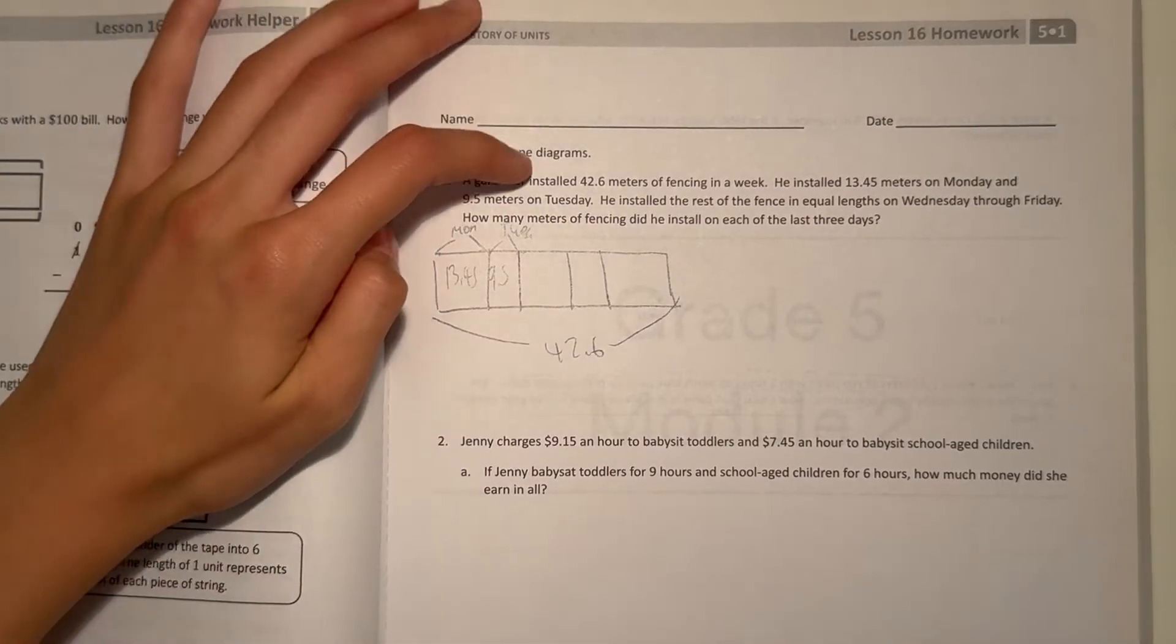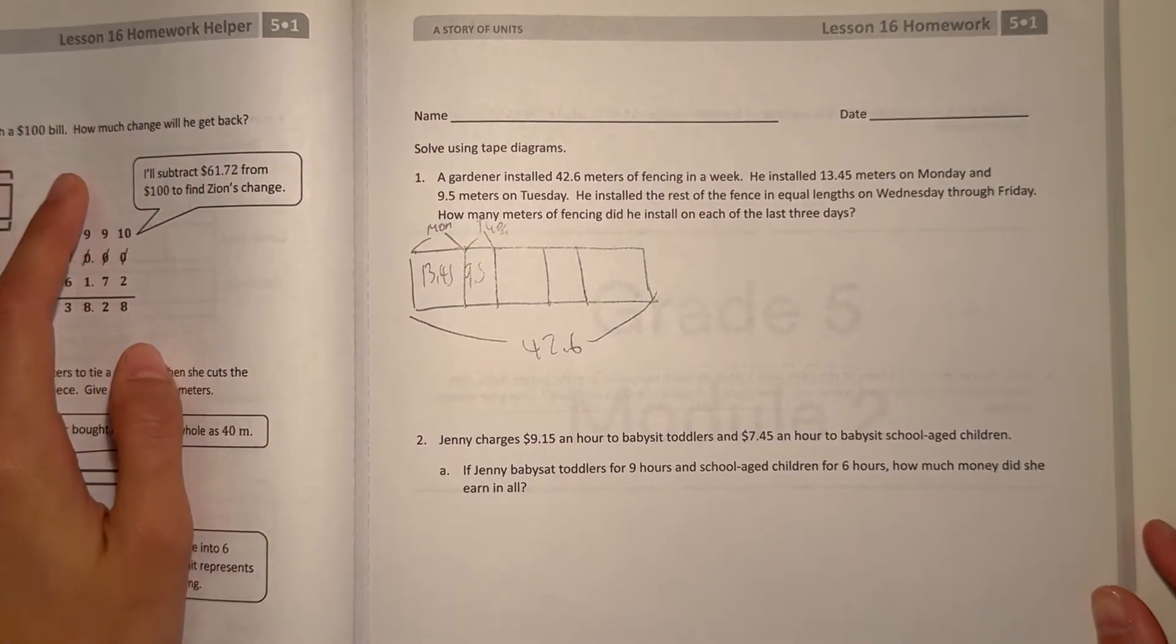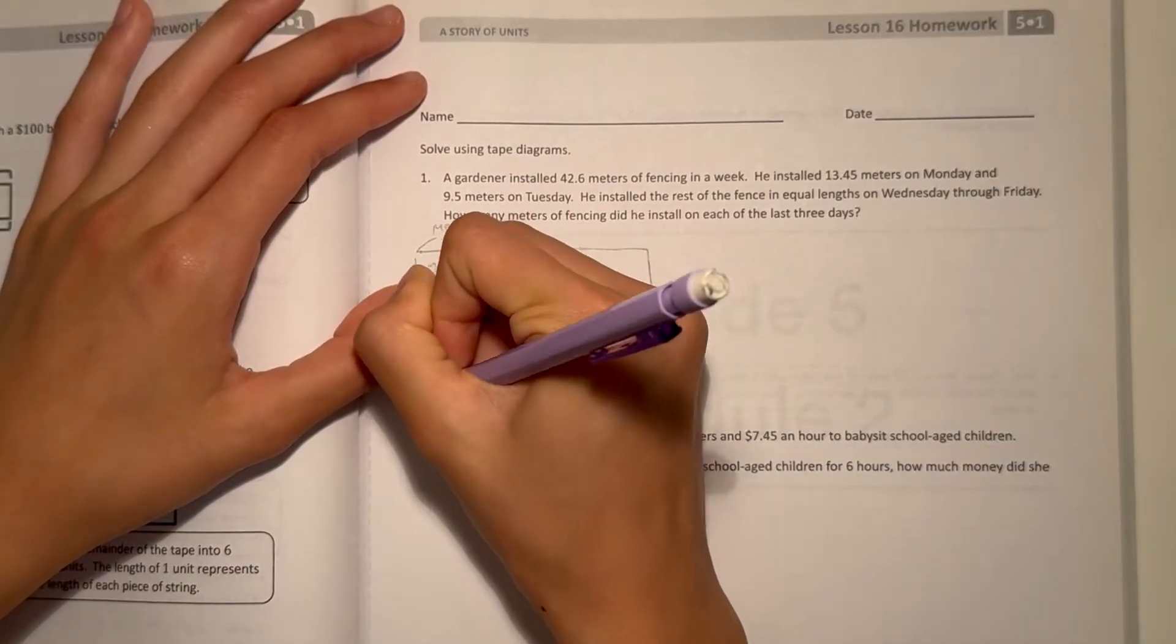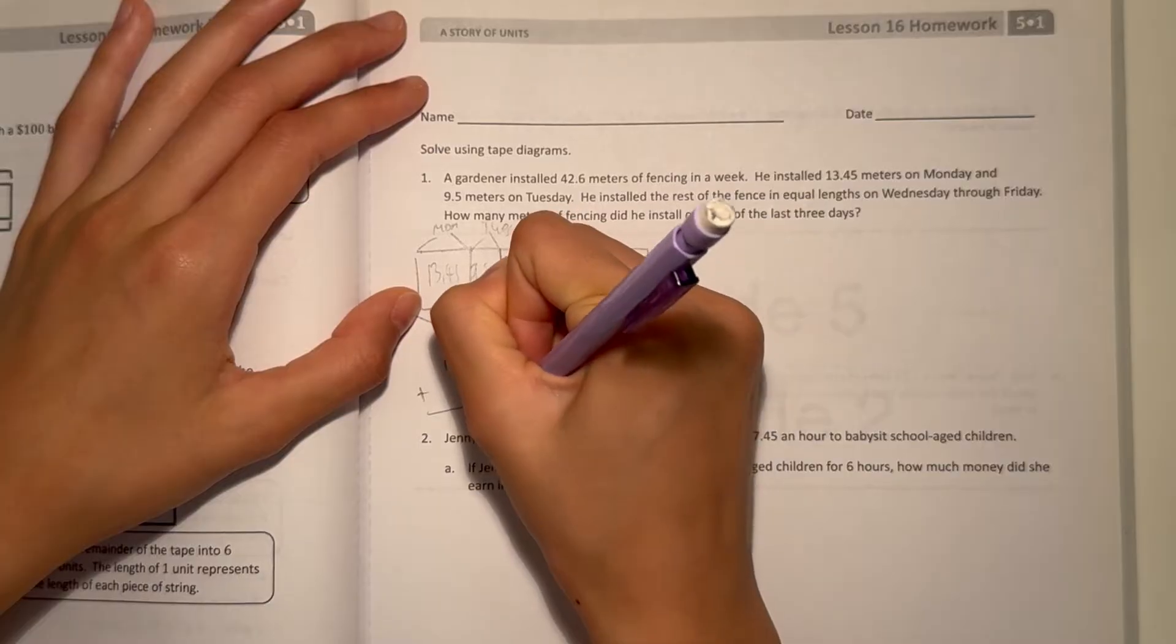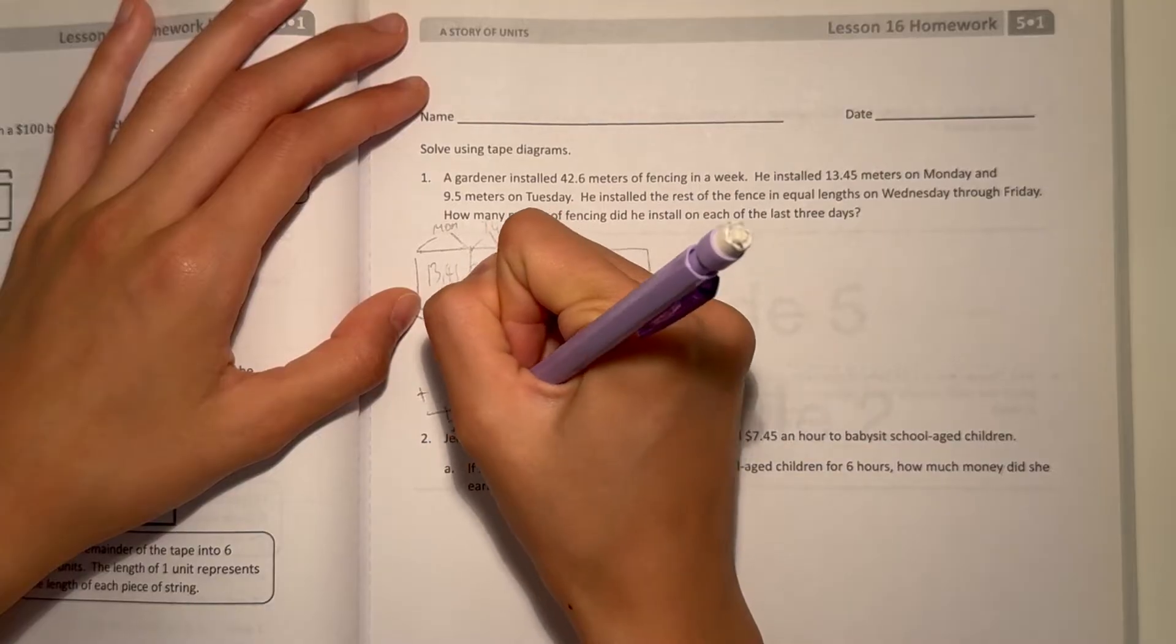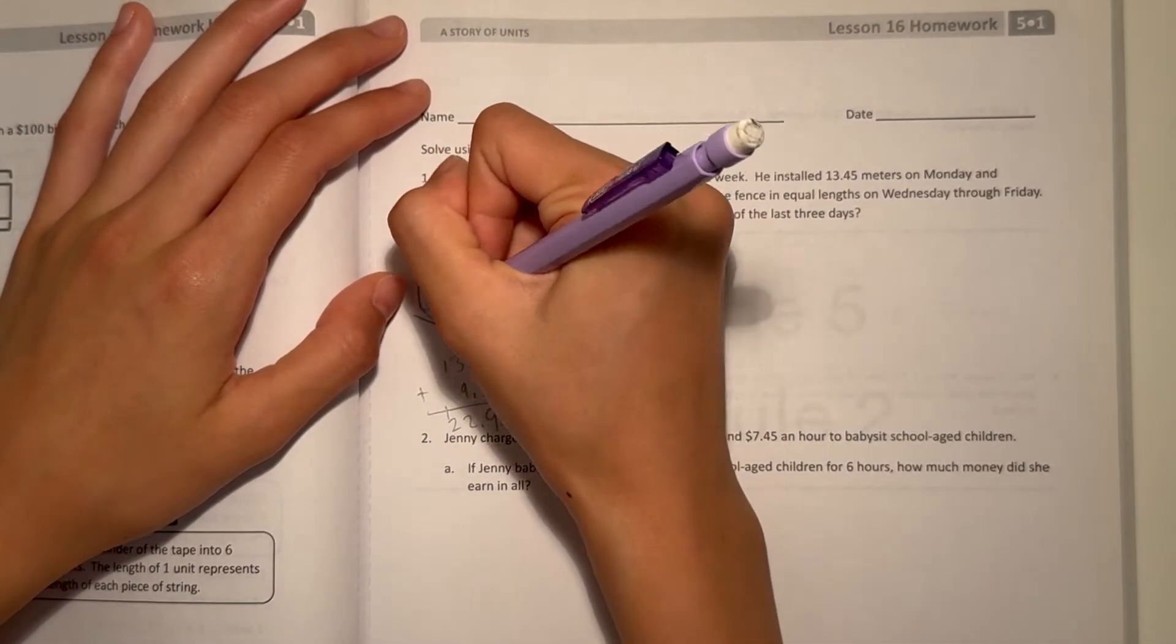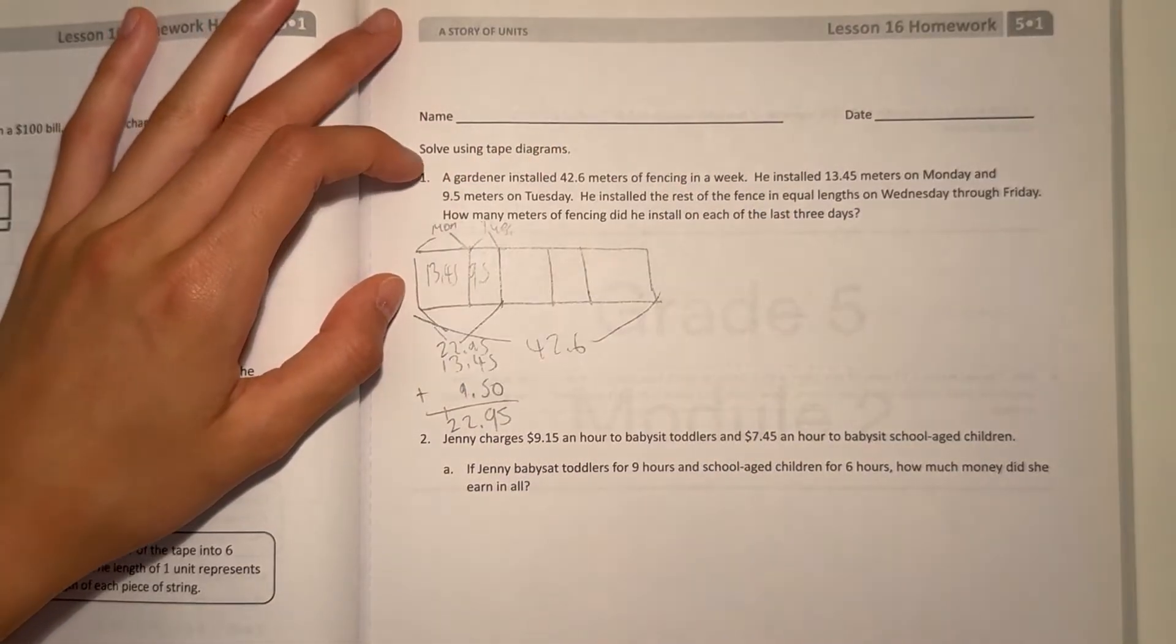First, find out how many fencing he installed on Monday and Tuesday. So 13.45 plus 9.5: 5 plus 0 is 5, 4 plus 5 is 9, 3 plus 9 is 12, and 1 plus 1 is 2. The answer is 22.95. So the total for these two is 22.95.